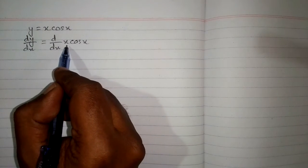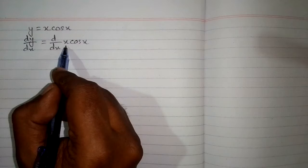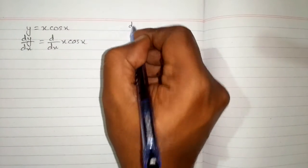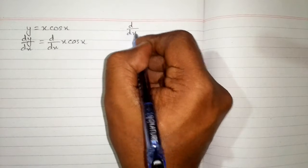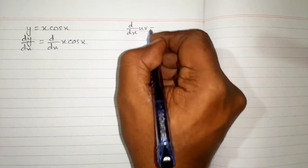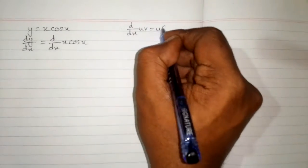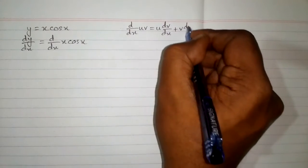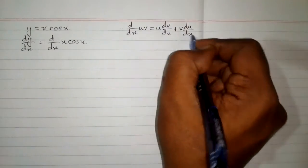Now we can see that we have product of two functions x and cos x. So we will apply product rule of differentiation which is d/dx of u times v is equal to u times derivative of v plus v times derivative of u.